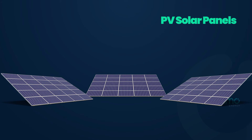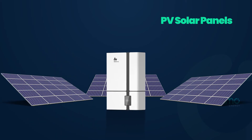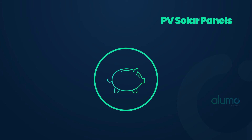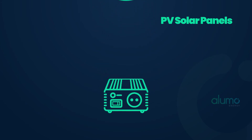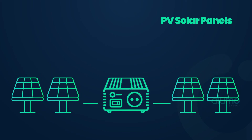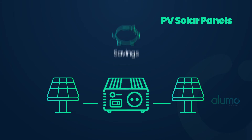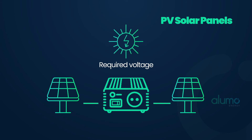Next, let's look at PV solar panels. There is a maximum and minimum number of solar panels that can be connected to your Alumo system. Remember, solar panels are the cheapest component of this installation. Depending on the size and type of your system, you might be limited to a certain number of solar panels that you can connect. Conversely, there is also a minimum number of solar panels that must be connected in order to result in any form of savings. In addition, you need to ensure that you have the required voltage to boot up the system.